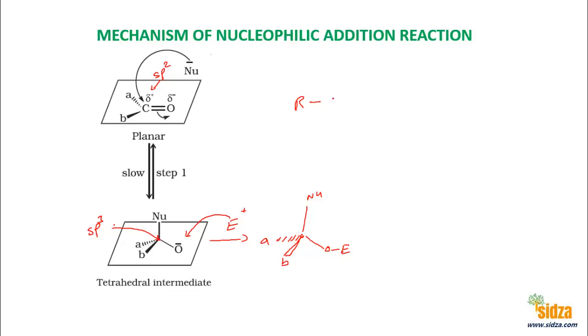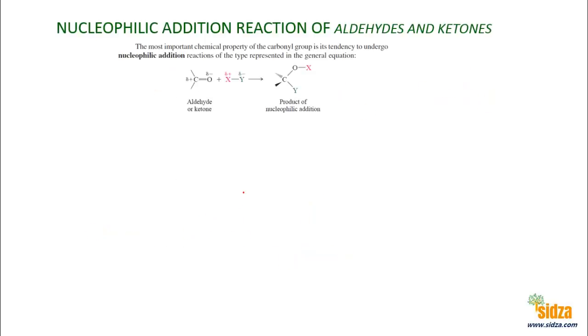All aldehydes and ketones contain a carbonyl group. An aldehyde is RCHO and a ketone is RCOR'. Both aldehydes and ketones can undergo the nucleophilic addition reaction.